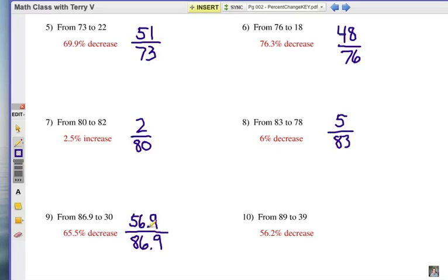Number 9, as you can see, the difference is 56.9 and divide by the 86.9, and that gives you 65.5 percent, and it's a decrease because you went down.